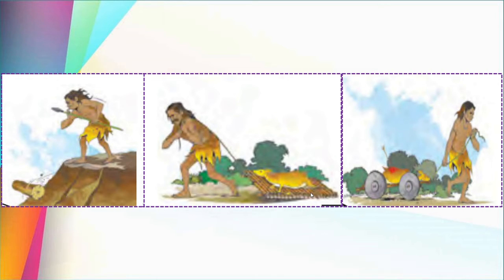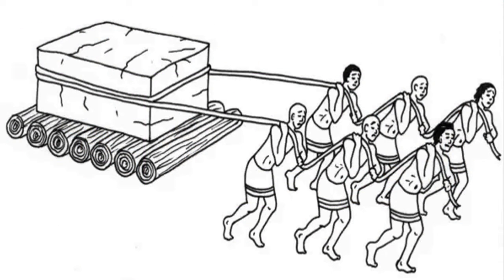He used the logs together to carry loads, and on this idea he prepared the wheel. Here you can see some people carrying a heavy load using wooden logs tied together. In olden days, planks of wood were used to transport objects. They used to drag this plank and carry heavy loads, but it was so difficult to drag.